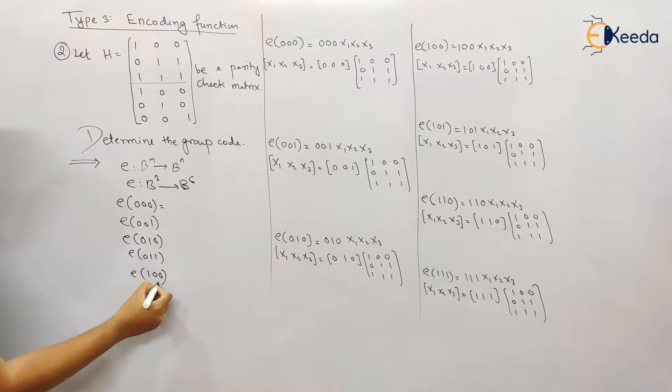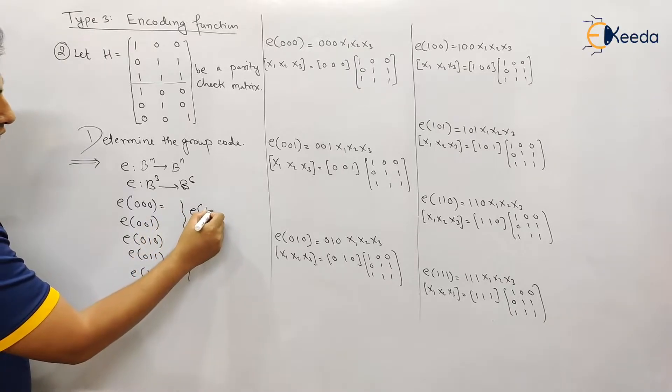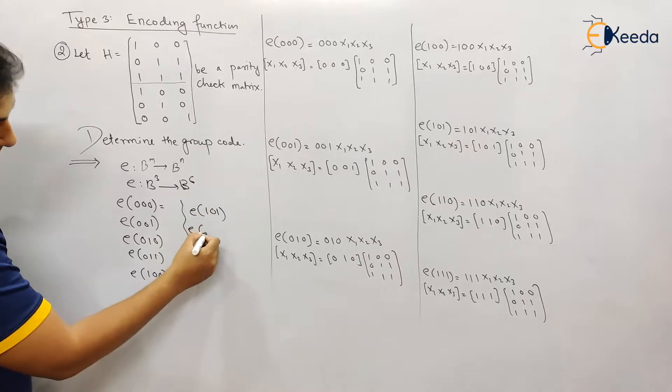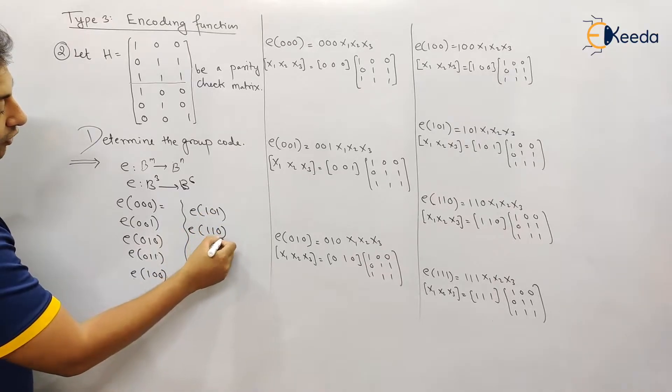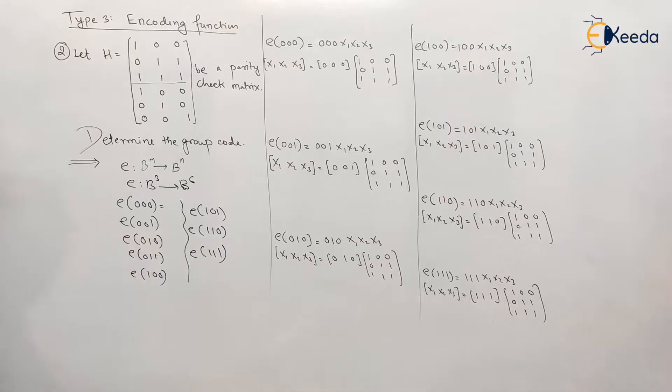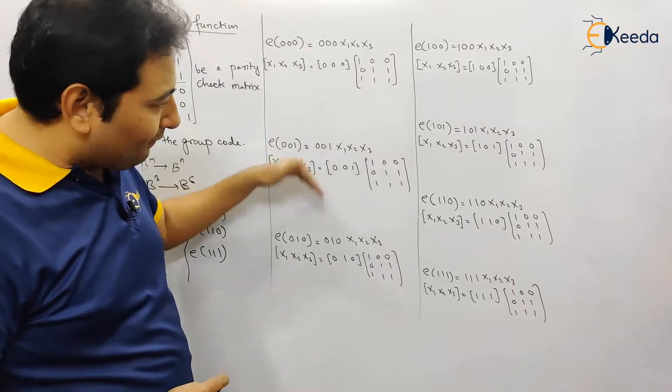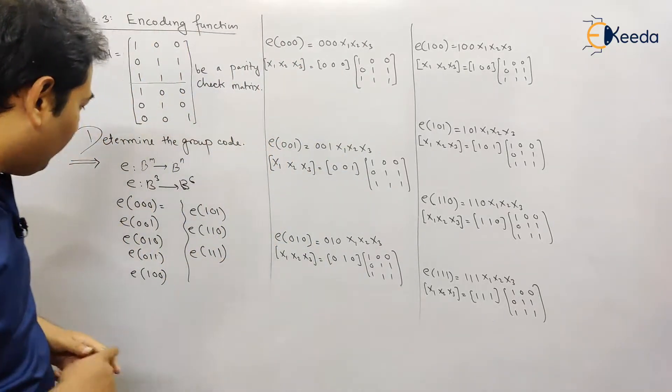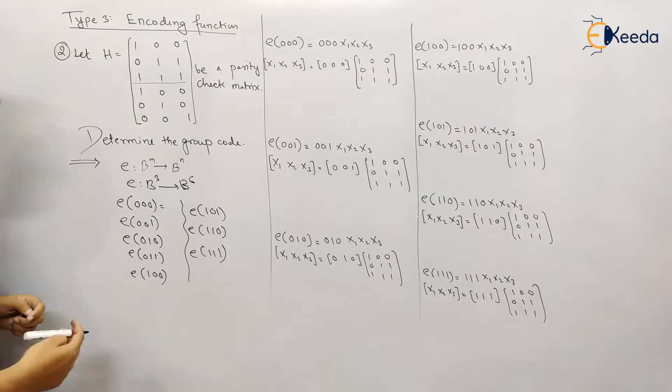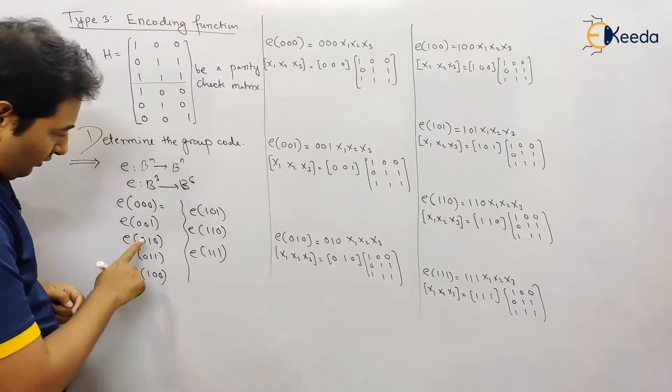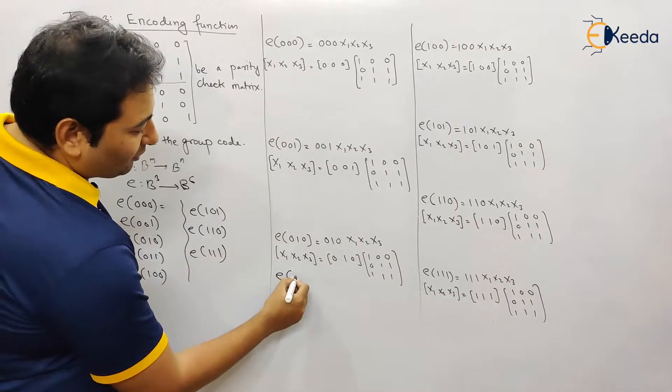1 1 1, 1 1 0, and finally 1 1 1. So we need to find out all the 8 codes. So here we have written seven codes, there is one more term missing, that is e 0 1 1.